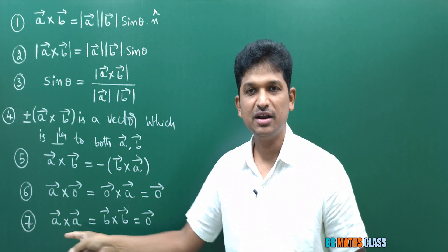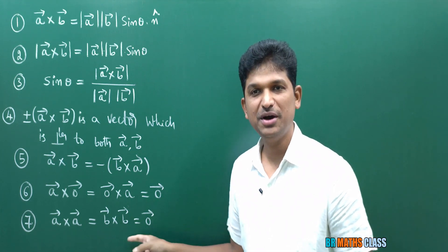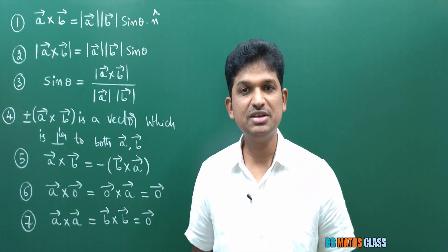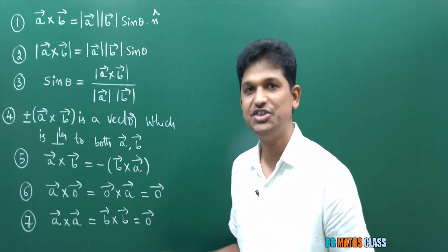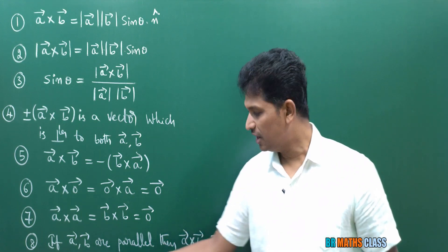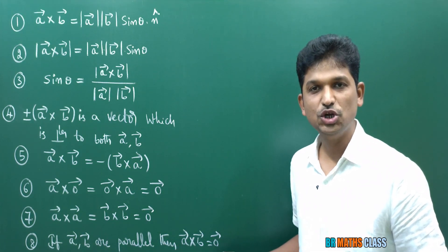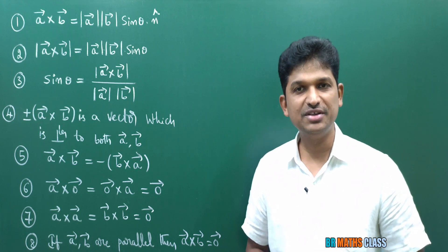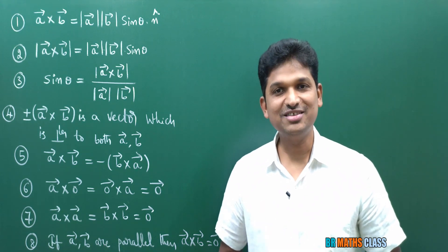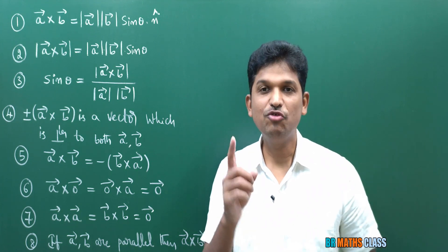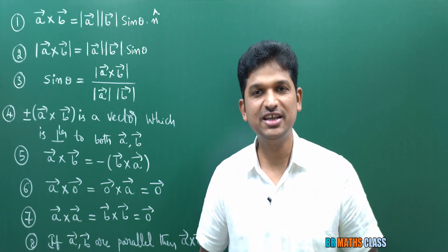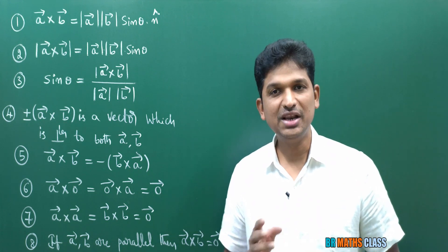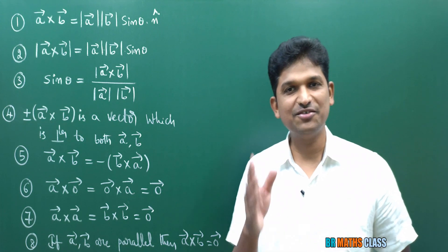Seventh formula: A bar cross A bar is zero bar. B bar cross B bar is zero bar. C bar cross C bar is zero bar. So wherever you see like terms crossed, the result is immediately zero bar. Eighth formula: if A bar and B bar are parallel, then their cross product is the zero vector. To prove two vectors are parallel, we calculate their cross product — if the answer is zero vector, the vectors are parallel. To prove two vectors are perpendicular, we use dot product, as we learned earlier.